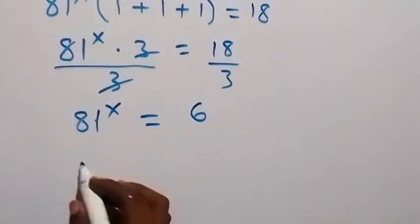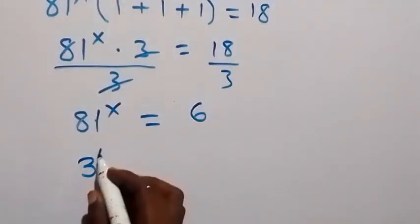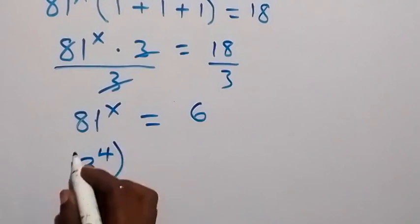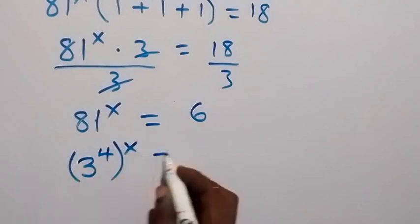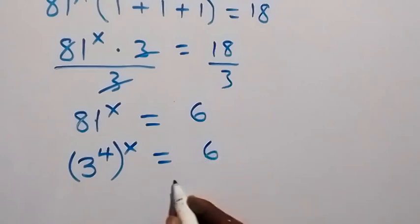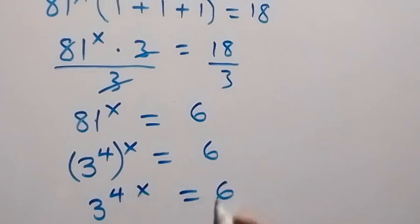From here, we can write 81 as 3 raised to power 4, then raised to power x, which equals 6. The powers multiply, so this becomes 3 raised to power 4x equals 6.